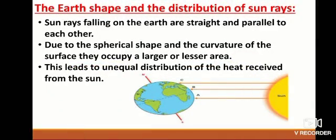The earth shape and the distribution of sun's rays. The sun rays falling on the earth are straight and parallel to each other.